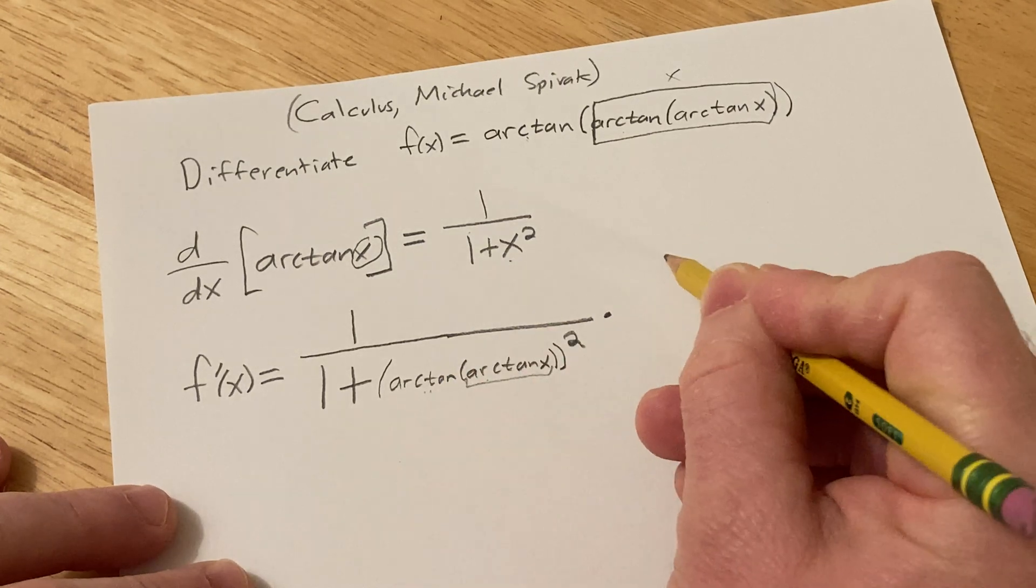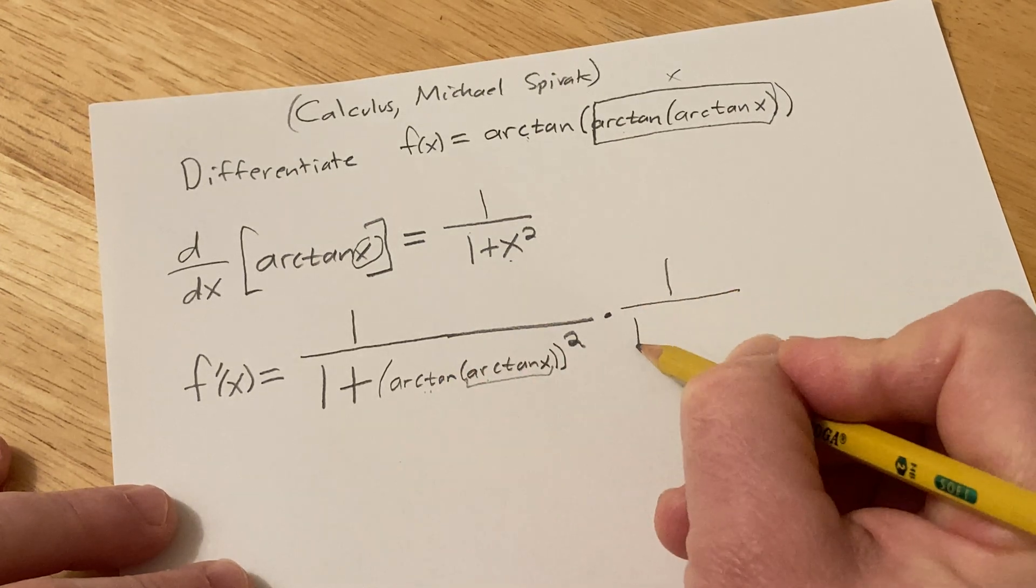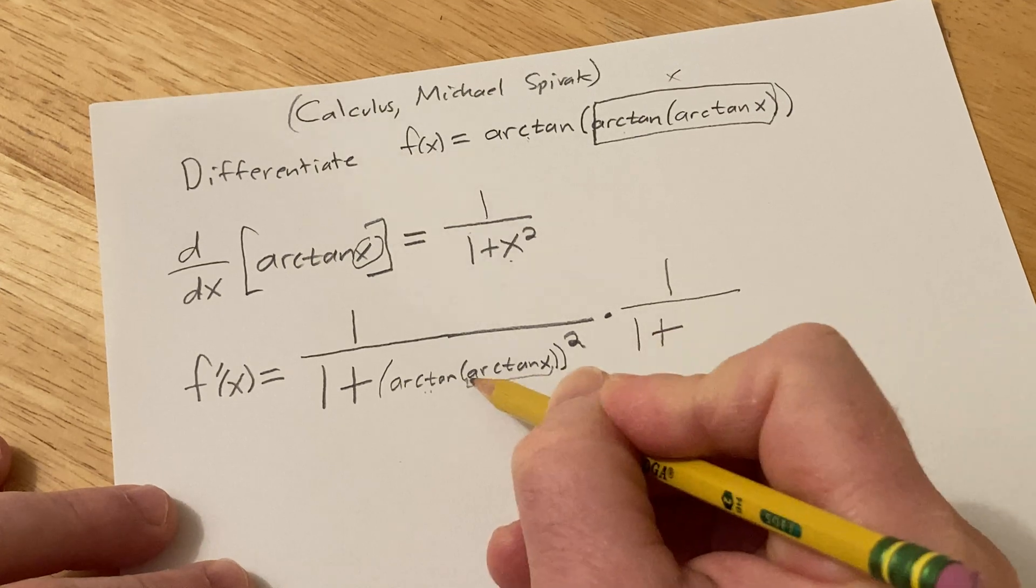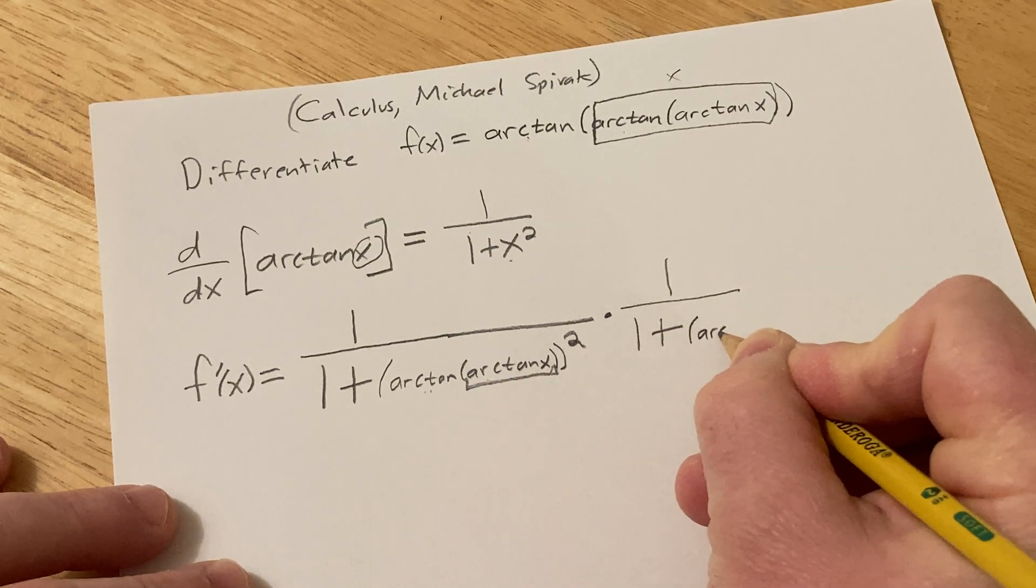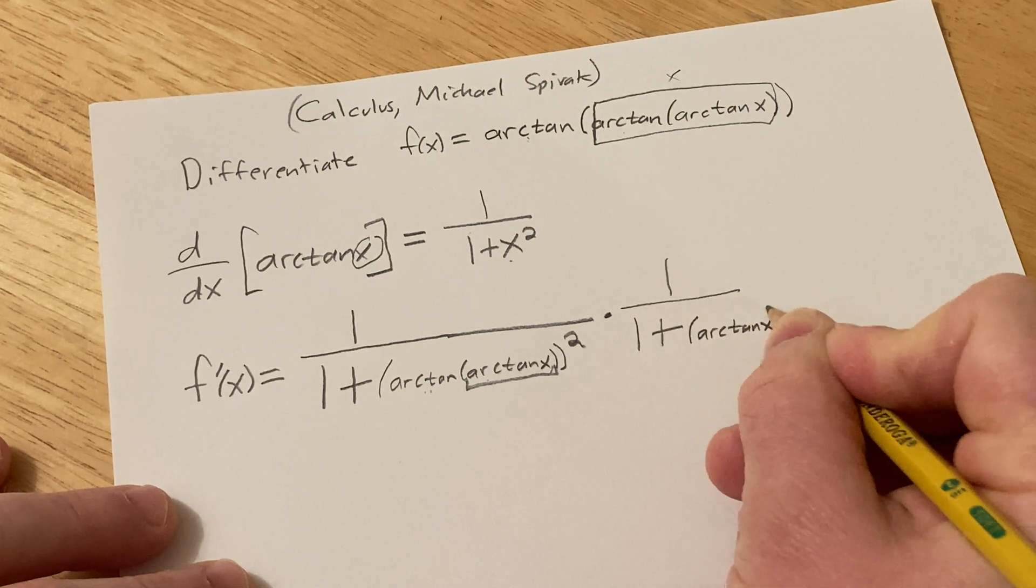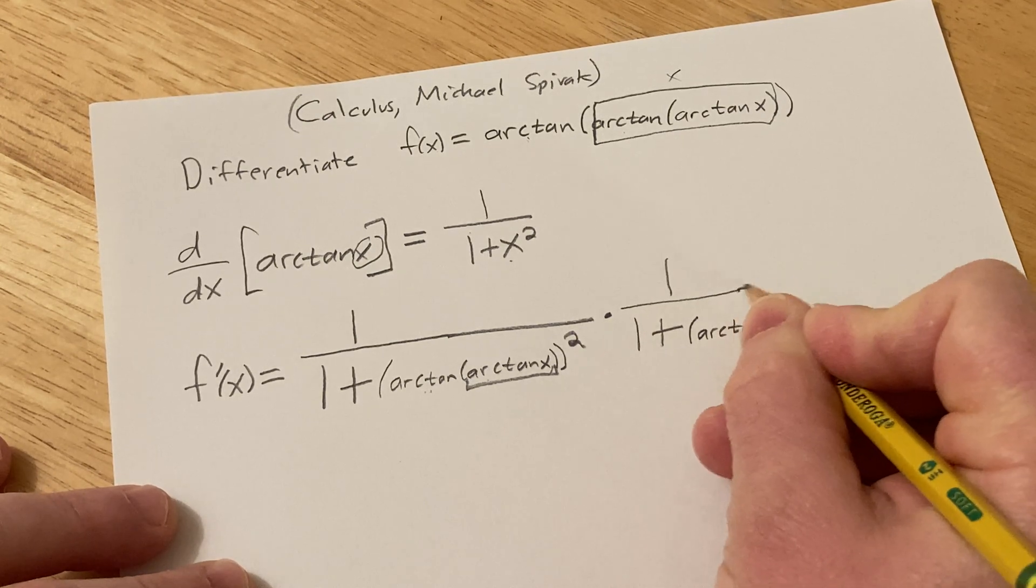So it's going to be times 1 over 1 plus, and instead of x, it's just this piece here. So that will be arctangent of x squared. And then times...